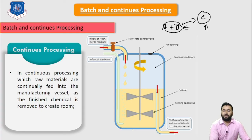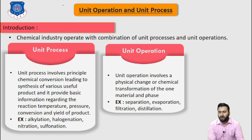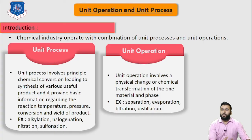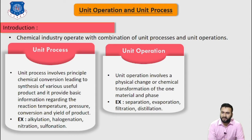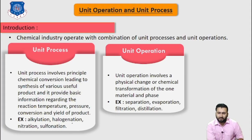This is about the batch process and continuous process. Now let's discuss about unit process and unit operation. Unit process involves principal chemical conversion leading to the synthesis of various useful products, and it provides basic information regarding the reaction temperature, pressure, conversion, and yield of product. For example: alkylation, halogenation, nitration, and sulfonation — these are all unit processes.